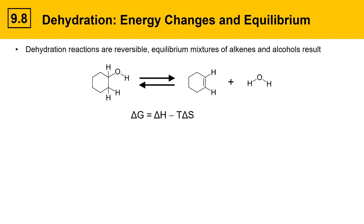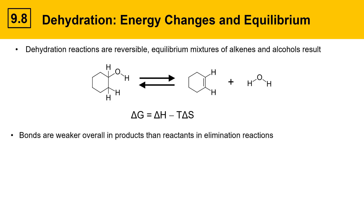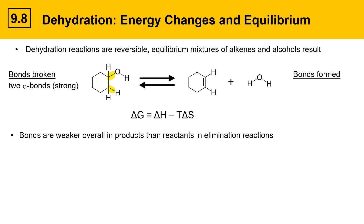Delta G affects equilibrium. The bonds are weaker overall in products than in reactants in elimination reactions. To see this, let's take an inventory of the bonds that are broken and formed. The bonds broken include two sigma bonds, which are fairly strong. I've highlighted the bonds that are breaking — the reaction requires energy input to break these bonds.